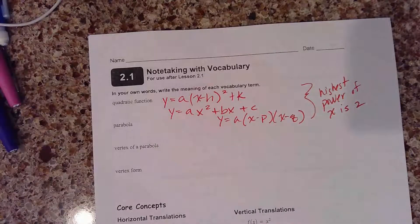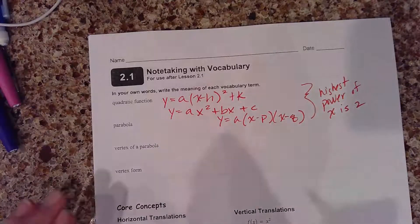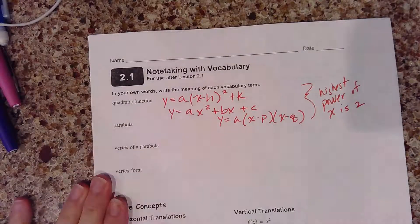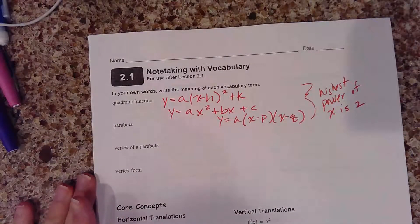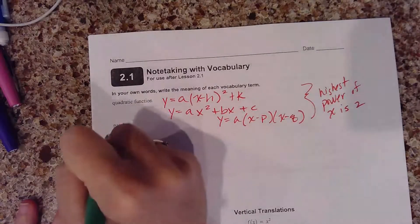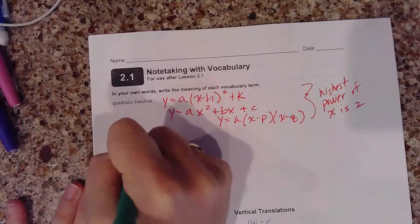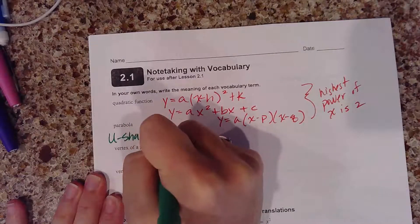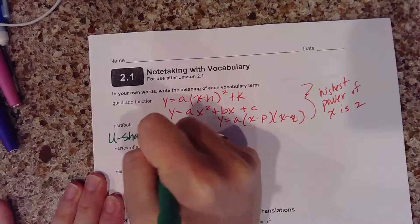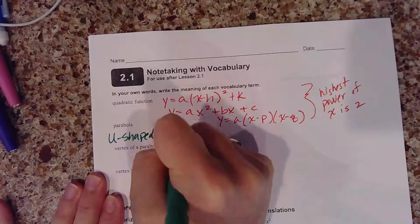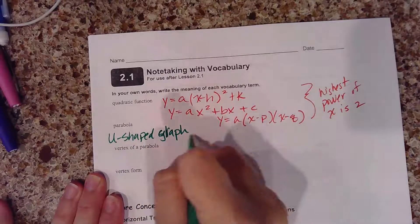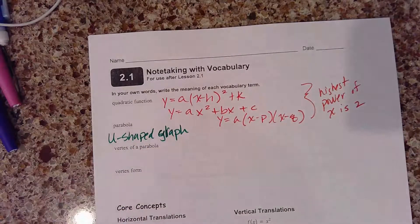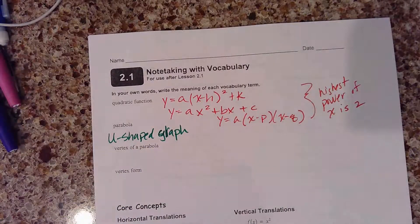We call the shape of a quadratic a parabola. I always use it as a U-shaped graph. When you graph a quadratic, it is a parabola.